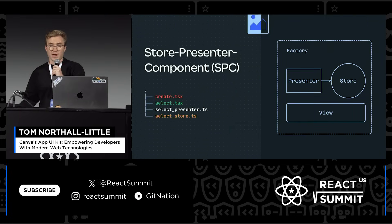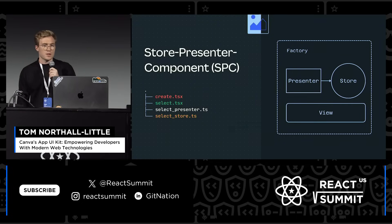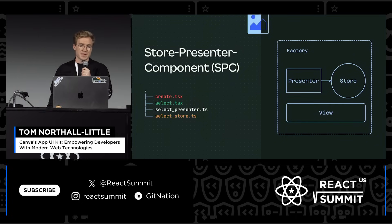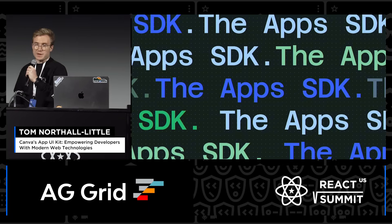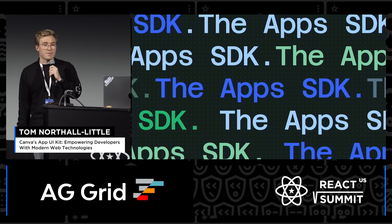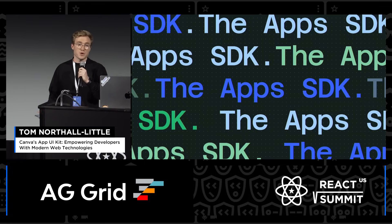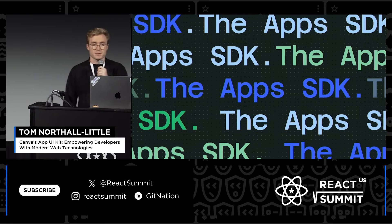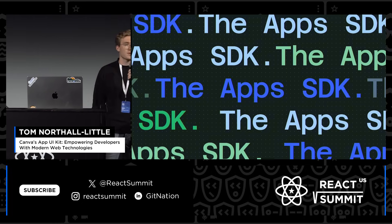MobX and React have enabled us to create a massively composable pattern across the codebase, and this has really enabled us to scale out. Over the past three years, I've been personally working on the Apps SDK, which is a set of APIs that enables developers such as yourselves to build unique experiences in the Canva editor.